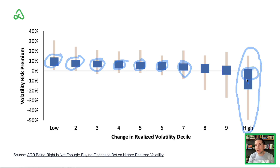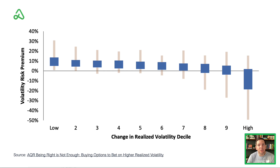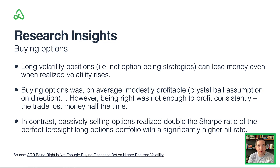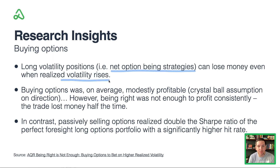The high volatility markets — like what we're experiencing right now — had the biggest disparity or range in volatility risk premium, because markets are moving and trying to figure out pricing. On average it was still in the top range, but it was the hardest market. It doesn't mean you can't trade in high volatility markets — just maybe scale back position sizing a little. The research from AQR also showed that long volatility positions, i.e. net option buying strategies, can lose money even when volatility rises, so option selling strategies are still the way to go.